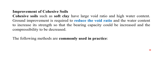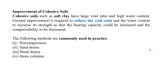The different methods normally used in practice to improve cohesive soil are: pre-compression, sand drains, wick drains, and stone columns. Since we have already studied stone columns, in this lecture we will not discuss that. We shall discuss only three topics: pre-compression (also called pre-loading), sand drains, and wick drains. Sand drains and wick drains both come under the category of vertical drains.